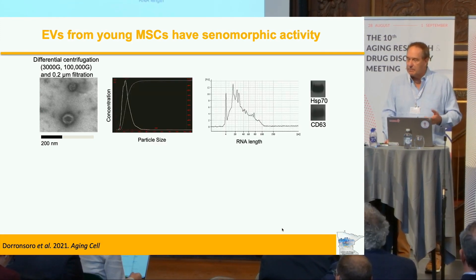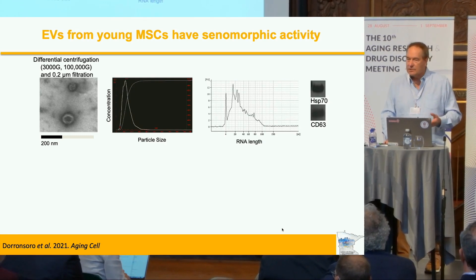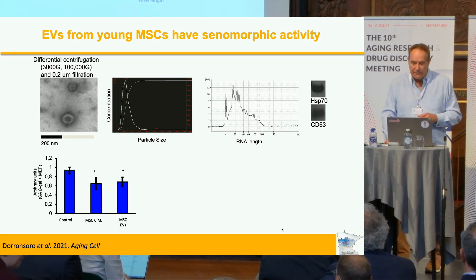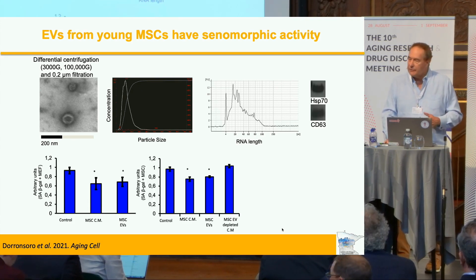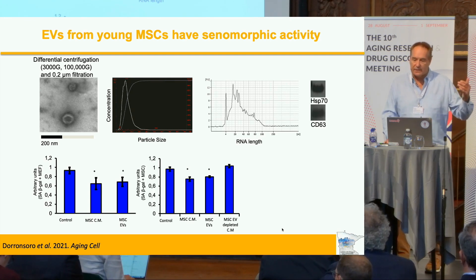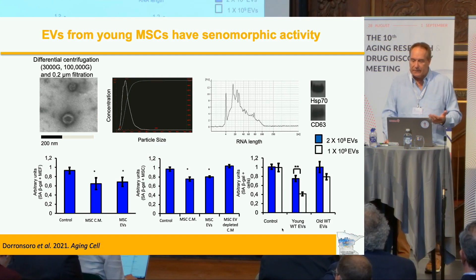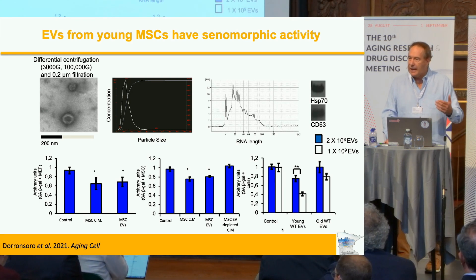We spent a lot of time trying to sort out what factor or factors from these young stem cells confer this effect. The positive finding was that we could isolate extracellular vesicles — predominantly exosomes because of their smaller size — and if you added these exosomes to our senescence assay, they worked the same as the conditioned media. If you depleted the conditioned media of EVs, you lost the effect. This isn't complete suppression; it's partial and dose-dependent — the more young EVs you add, the better the effect, and old stem cell EVs don't work as well.